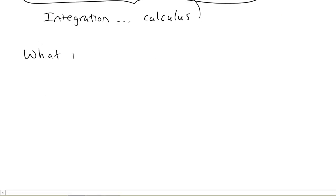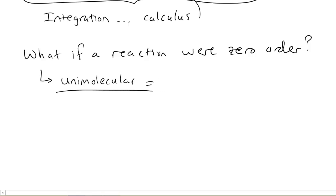So we can ask the question, what if a reaction were zero order? And not just any reaction, we're going to talk about a very specific kind. We're going to talk about unimolecular. It's a big word, but it's pretty straightforward in what it's telling us. Unimolecular, meaning only one reactant. So we could have a reaction like this: A goes to products, or 2A goes to products, something like that.